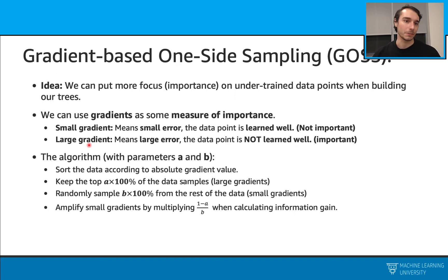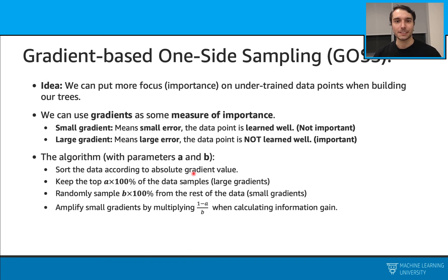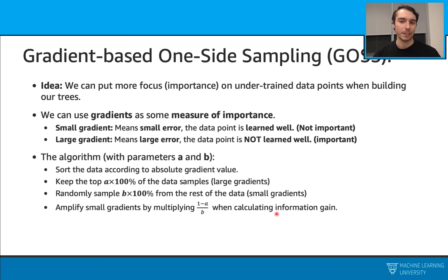We will do that with this algorithm here. We have the parameters A and B. We will first sort the data points according to their absolute gradient values. Then we will keep the top A fraction of the data — that will become our large gradient data points. Then we will randomly sample B fraction of the data from the rest of the dataset, and that will correspond to small gradient data points. Overall, we will use this dataset to train our model. When we are doing this, we are kind of changing the data distribution, and in order to compensate for that effect, we will amplify the small gradients with a scalar here when we are calculating our information gain.